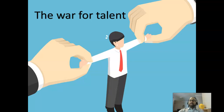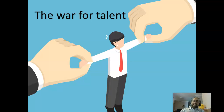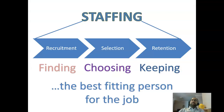Organizations live, die, and prosper on the basis of their human capital. Not always and not exclusively, of course, but nevertheless, we have seen decades of evidence showing that the quality of human capital makes a world of difference for the productivity and the survivability of an organization. So this unit will equip you with the fundamental skill sets needed for finding, choosing, and keeping the best-fitting person for any given job. These three processes — recruitment, selection, and retention, respectively — fall under the rubric of staffing.